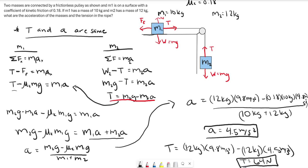We solved a system of two equations with two unknowns to find the acceleration and tension. The key takeaways are: when two masses are connected by a rope over a pulley, the tension and acceleration are the same for both. Think of the connecting cord as the axis you work along. Hopefully that was helpful — let me know if there's anything else you'd like to see. Thanks for watching.